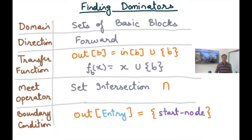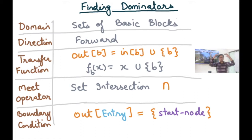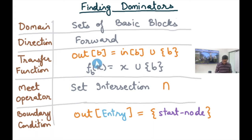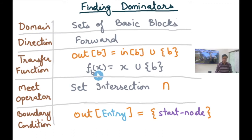I'm going to set up dominator analysis as a data flow analysis, and it's really easy to do that. The domain of the data flow analysis is sets of basic blocks — these are the basic blocks that dominate the current program point. The direction is forward, because we are interested in finding properties on paths starting from the beginning of the program. The transfer function is simple: out(B) = in(B) ∪ {B}. So whatever is the set of dominating basic blocks before this statement, just add this block to it — that's the set of basic blocks dominating the point after. In other words, f_B(x) = x ∪ {B}. The meet operator is set intersection, coming from the requirement that a dominator must be present on every possible path.